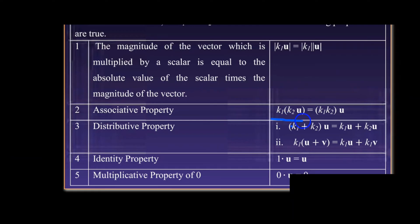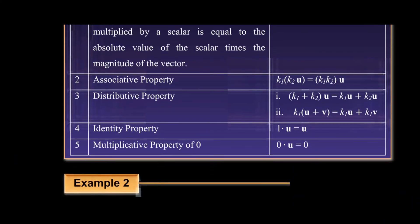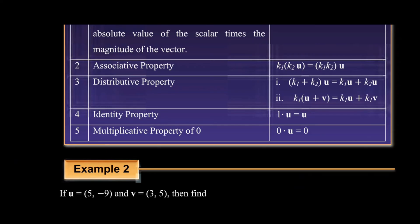As you can see, there is a difference. The other one is the distributive property — it is k1 plus k2. The distribution property applies here. This is also the identity property — this is the vector. This is the multiplicative property of 0: 0 times vector equals the zero vector, equal to (0, 0) vector.